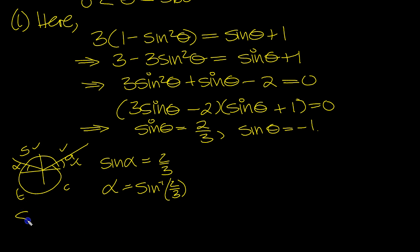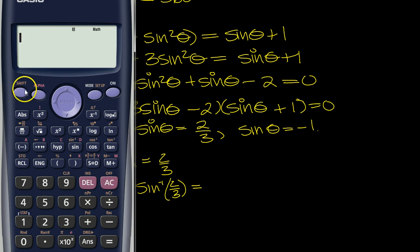Alpha is shift sine 2/3. So the answer then, let's tap that in a calculator. I've got degrees mode. So shift sine of 2/3, 2 divided by 3, close that. 41.81 degrees.